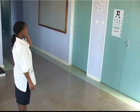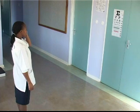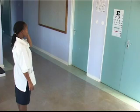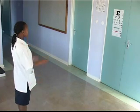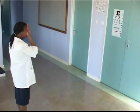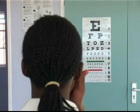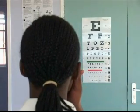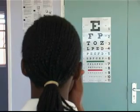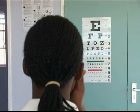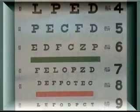If at 20 feet the smallest readable letter is larger, vision is defined as the distance from the chart over the size of the smallest letter that can be read. So a person with poor vision can have 20-50 vision, and a person with good vision can have 20-10 vision. The letters on the top lines are the largest, those at the bottom line are the smallest.